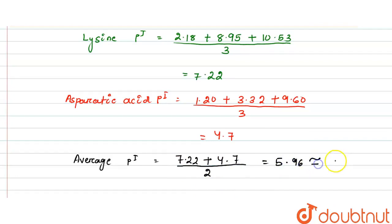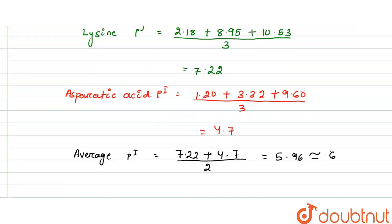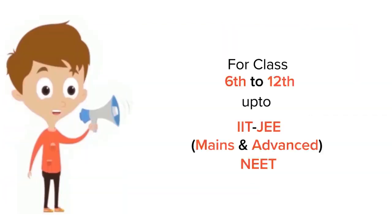Okay, so the average isoelectric point value is 6. Thank you.